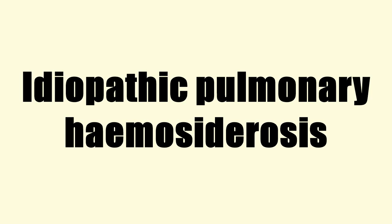Death may occur suddenly from acute pulmonary hemorrhage or after progressive pulmonary insufficiency resulting in chronic respiratory failure. Treatment: corticosteroids are the mainstay of treatment of IPH. Though they are controversial and lack clear evidence in their favor, they are thought to decrease the frequency of hemorrhage, while other studies suggest that they do not have any effect on the course or prognosis of this disease.